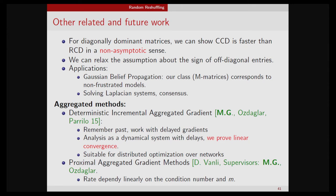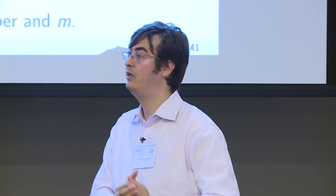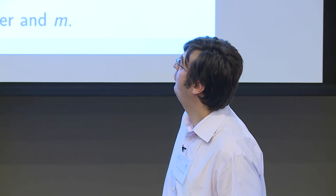It was a surprise to us, but the class of problems we work with appears in Gaussian belief propagation — when you want to do inference on graphical models. Our results hold for Laplacian-like matrices, which this literature calls non-frustrated models. Our results have practical implications for Gaussian belief propagation models, and you can also apply this in consensus-type protocols where you know which edges to activate.